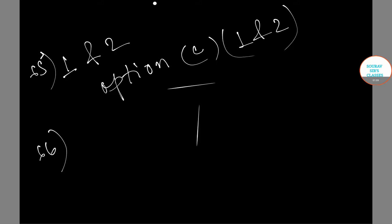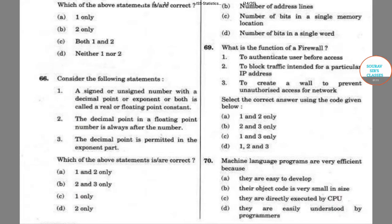Now we will do question number 66. Let me read the question for you first. In question number 66 we are given statements. A signed or unsigned number with a decimal point or exponent or both is called a real or floating point constant. The decimal point in a floating point number is always after a number. The decimal point is permitted in the exponent part. So which of the following statements is or are correct? We are about to check it.